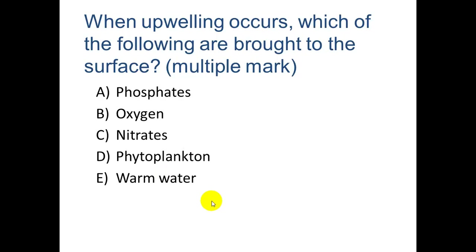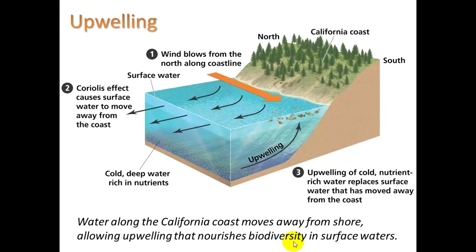Warm water is already at the surface, so that's not the answer. Oxygen is actually always greatest at the top, because that's where photosynthesis is happening with the algae. Sunlight can only go so deep into the water, so it's really only the top layer of the ocean that has a lot of photoactivity happening. And phytoplankton are the ones doing the photosynthesis, so they're also only at the top. The waters down at the bottom are very nutrient-rich — oxygen-poor, but nutrient-rich, and cold.